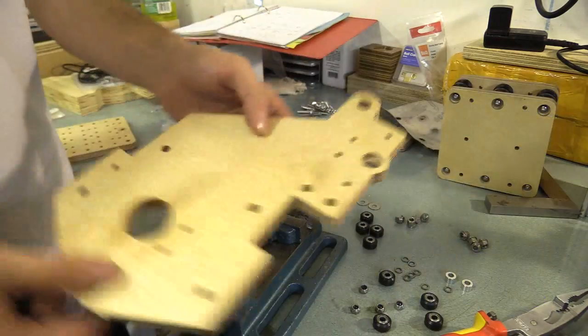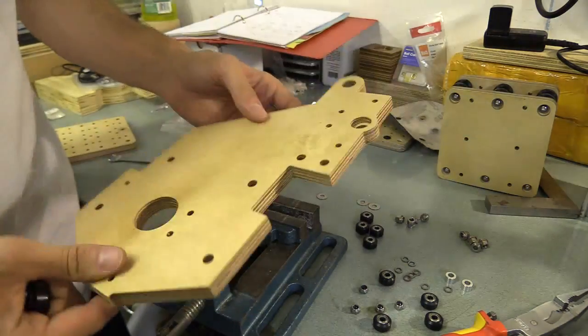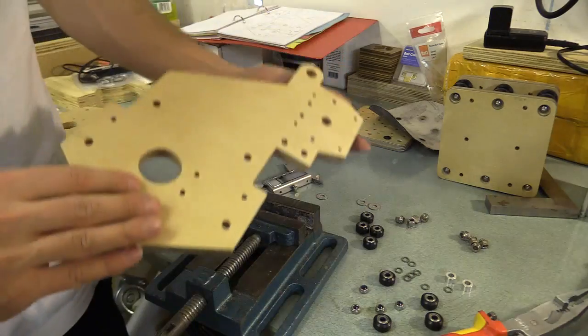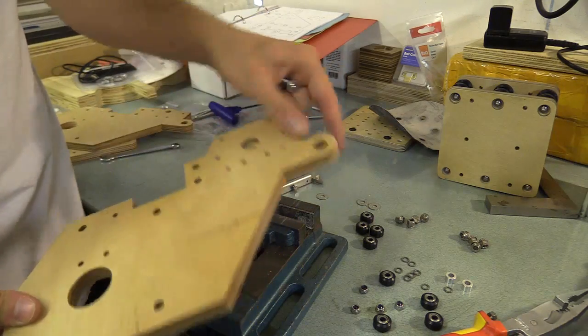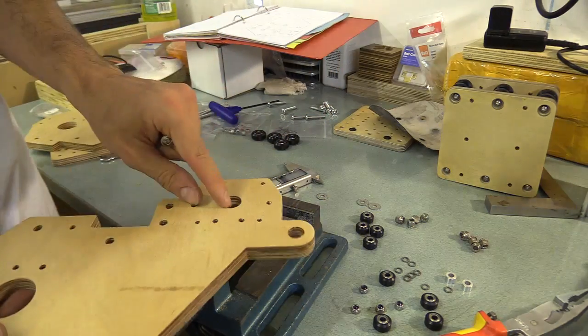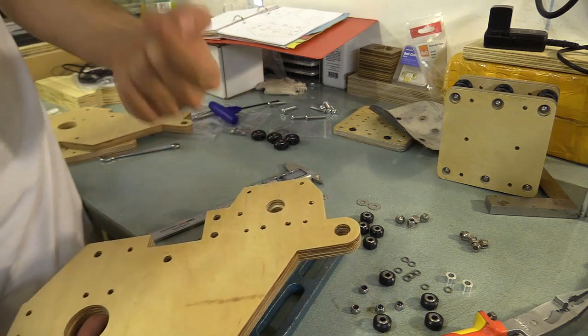I'm going to assemble the Y plates now, and again using the pillar drill vise to make assembling easier. I'm going to put the wheels on the Y plate now. I'm just going to make sure that the bearing hole is facing inwards.